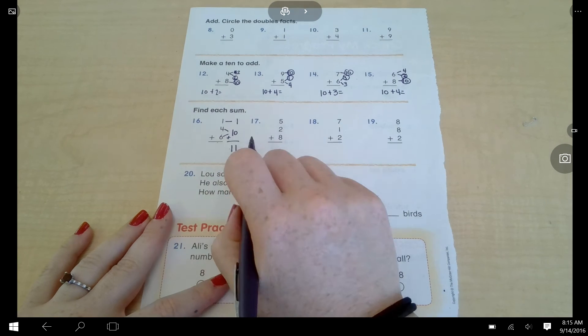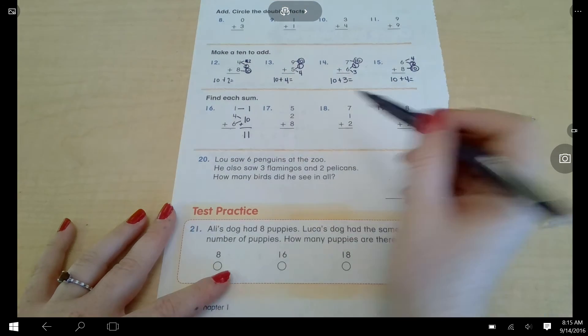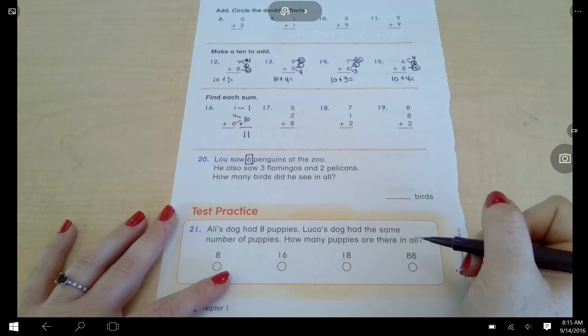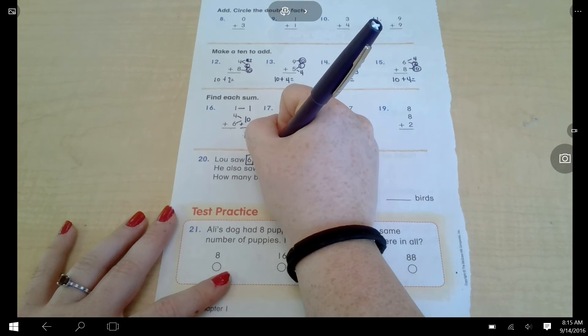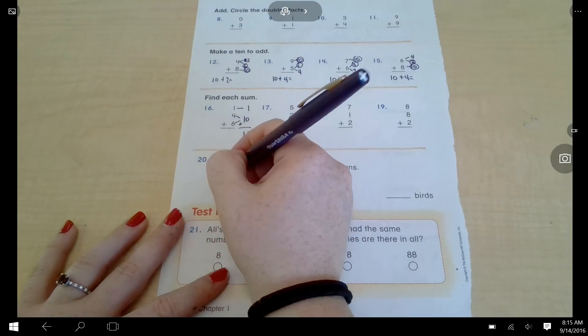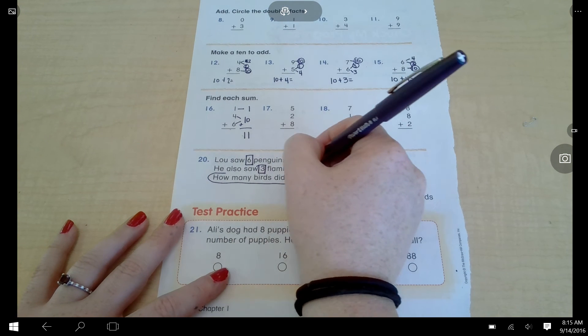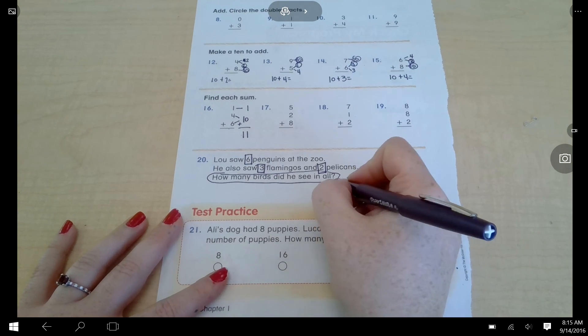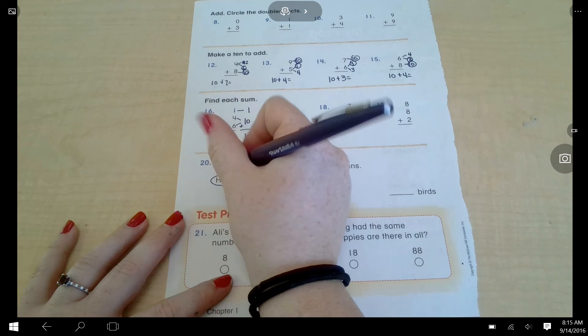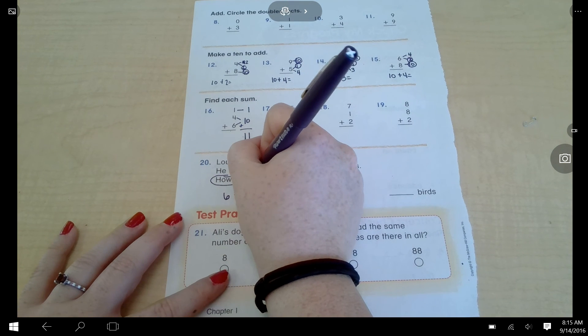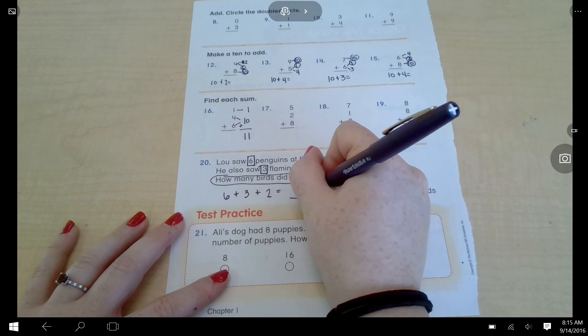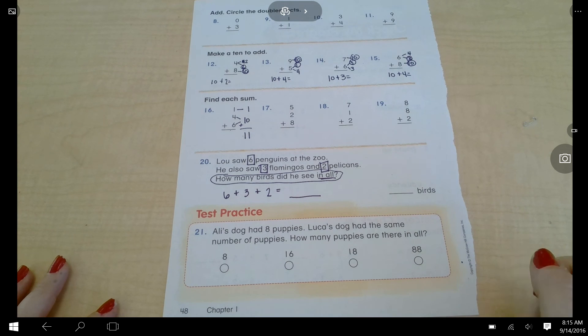All right, you should have just completed sixteen, seventeen, eighteen, nineteen. Look at number twenty. Lou saw six penguins at the zoo. He also saw three flamingos and two pelicans. How many birds did he see in all? In all is important information. That tells me I need to add. Pause the video, solve that problem now.